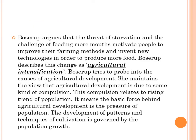Boserup's main argument is that as population increases, the need for food rises because there will be more mouths to be fed. Therefore, more areas will be brought under cultivation. This is described as agricultural intensification — as population increases, more agricultural lands are put under intensified cultivation. She maintains that agricultural development is due to compulsion, as population increases and forces people to bring more land under cultivation, adopting more technologies to increase productivity.